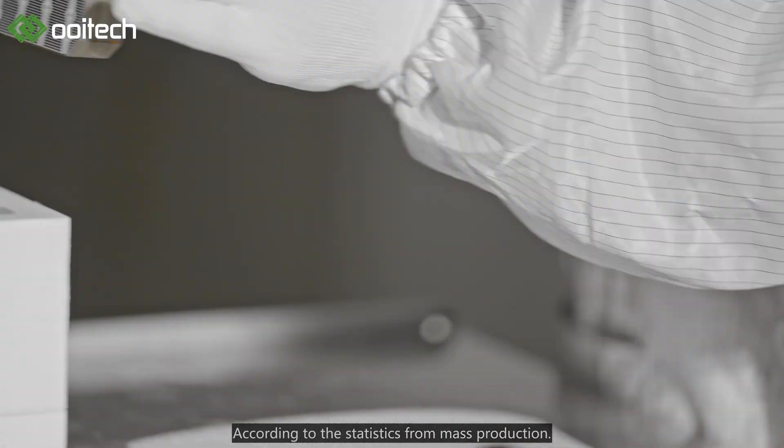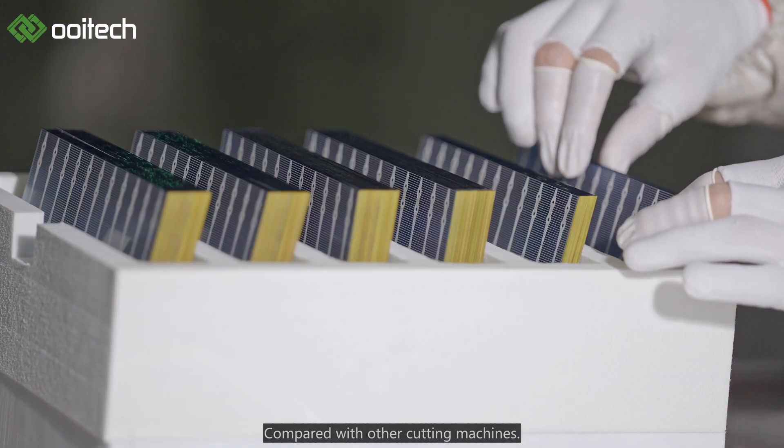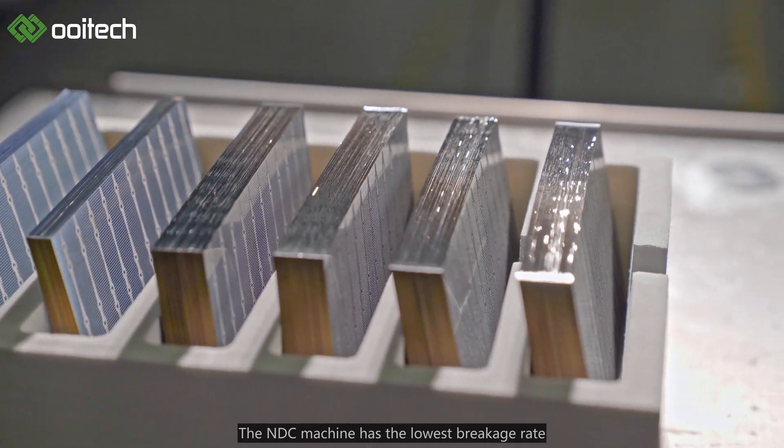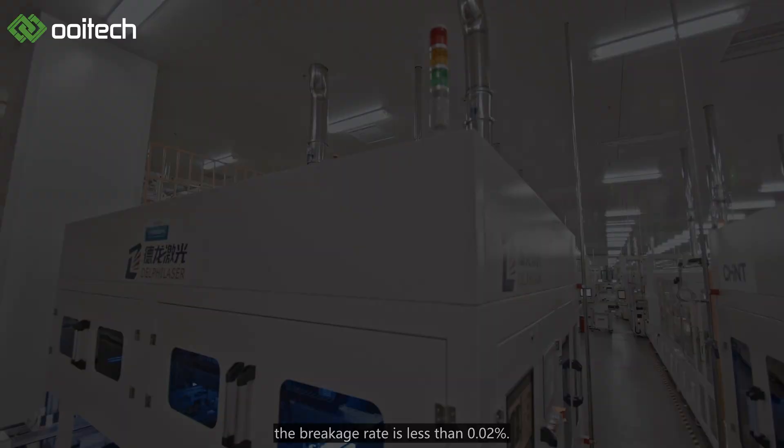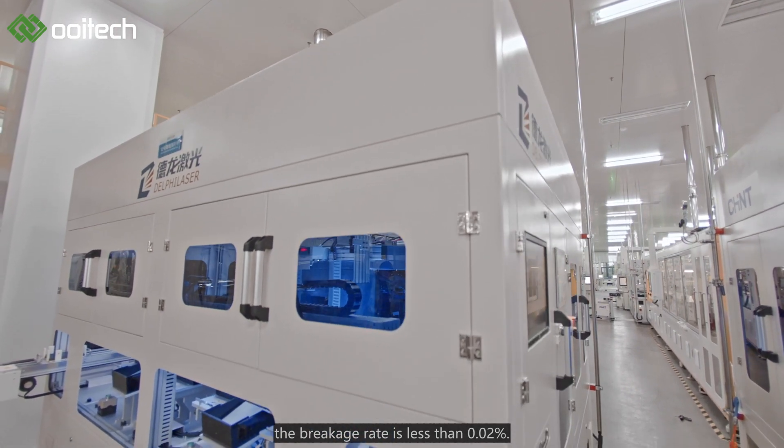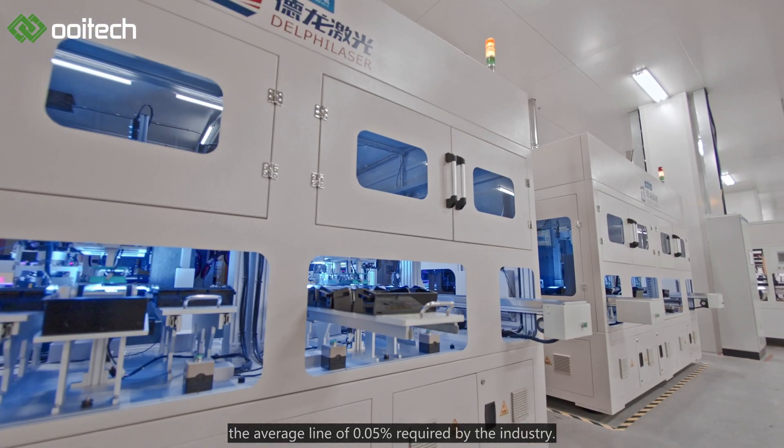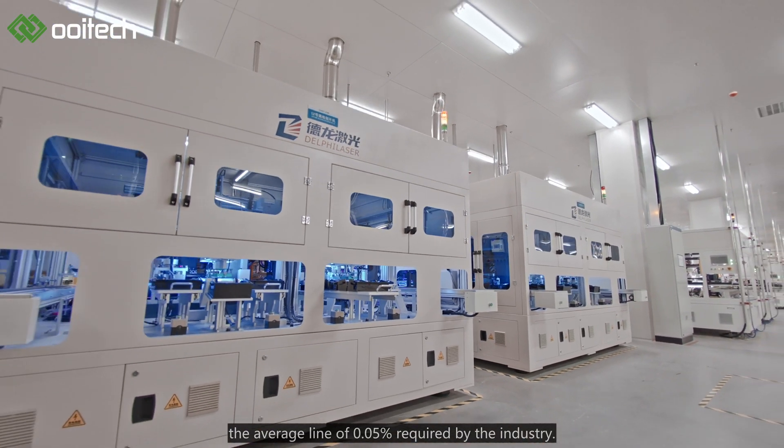According to statistics from mass production, compared with other cutting machines, the NDC machine has the lowest breakage rate and highest cutting accuracy. Actual statistics show the breakage rate is less than 0.02%, much lower than the average of 0.05% required by the industry.